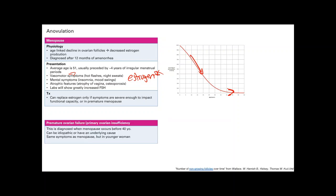So premature ovarian failure, another name is primary ovarian insufficiency. It's the same thing as menopause. It's just basically when it happens before 40 years old. And it can just happen by itself. Or there can be some underlying medical condition that causes your ovaries to fail. And you'll see these exact same symptoms as menopause. It's just in a younger woman.